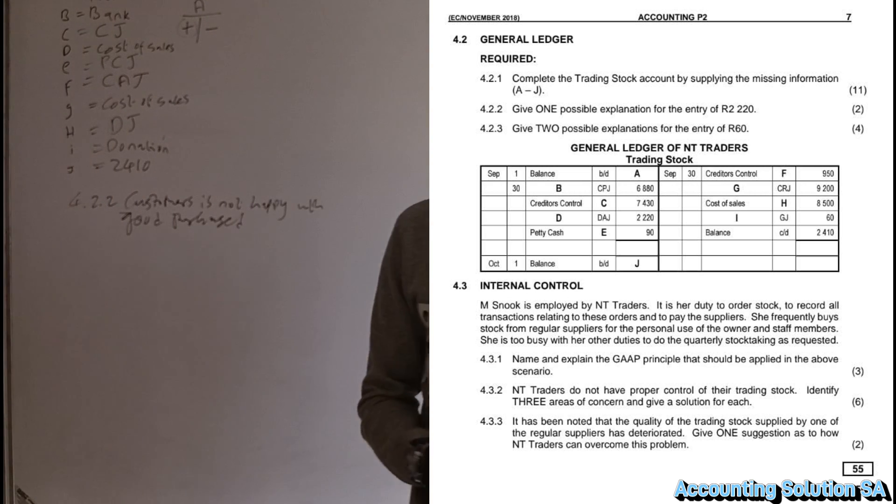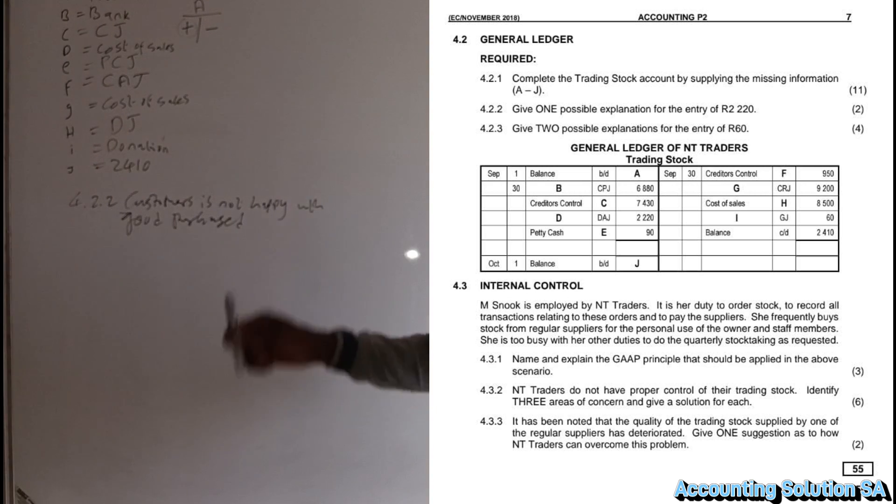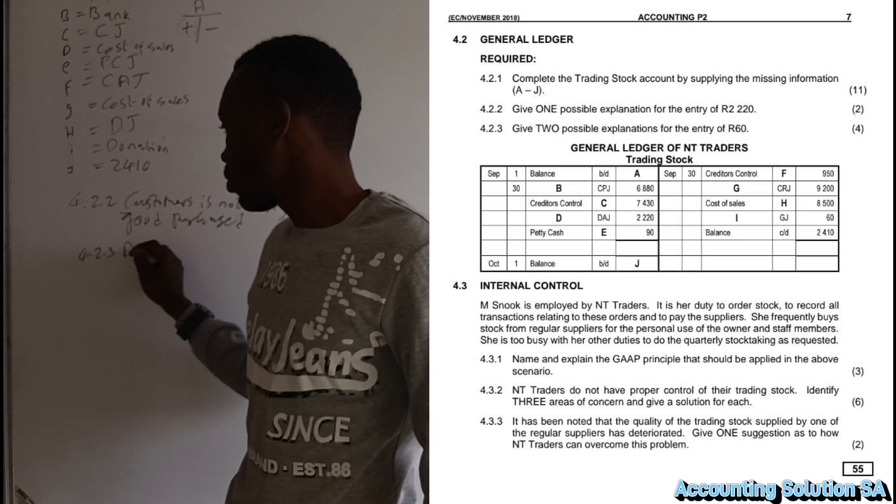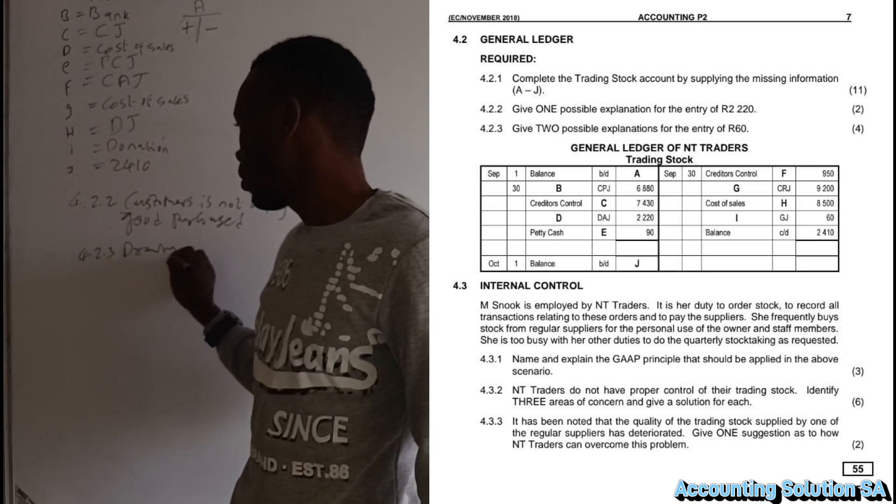Then the next one, 4.2.3: Give two possible explanations for entry of 60,000. I think we already answered it. That is, it can be drawings or donation.